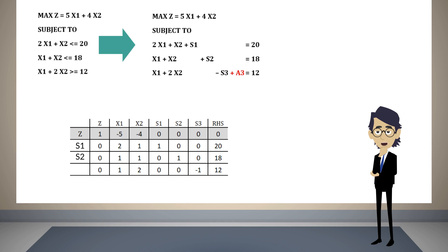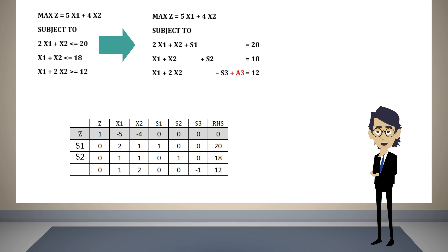One way to force this variable to have a value of 0 in the solution is to assume that it causes a very big loss of profit, so the method will force a3 to equal 0 when the problem is finished. To achieve this, the coefficient of a3 in the objective function is set to minus M, where M represents a very big value. This is the reason why this method is known as the Big-M method.